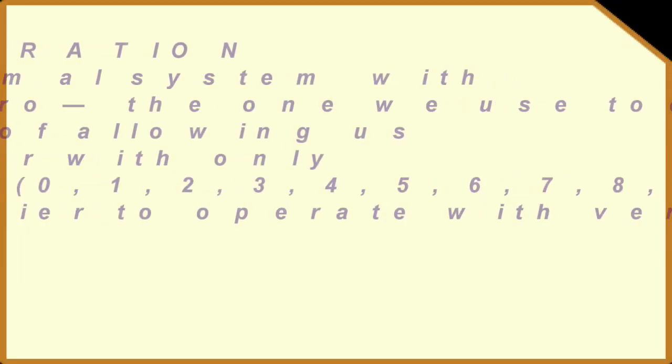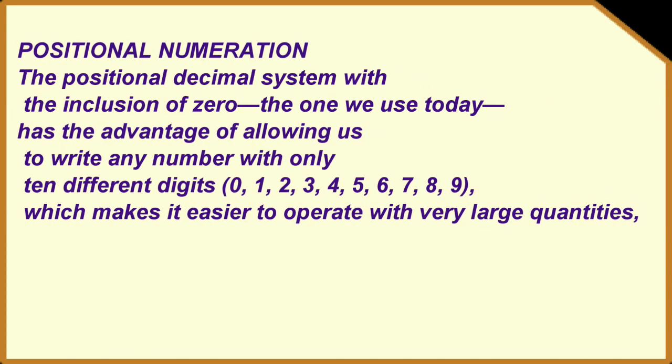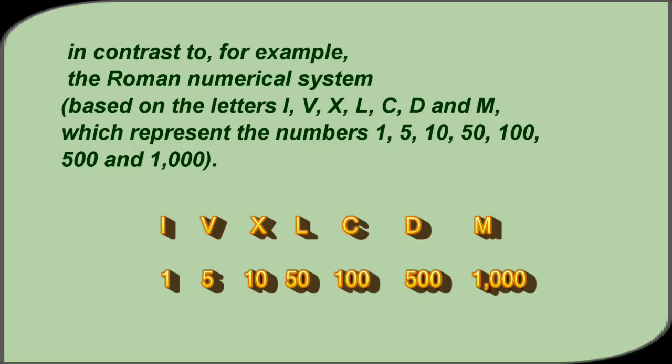Positional numeration. The positional decimal system with the inclusion of 0, the one we use today, has the advantage of allowing us to write any number with only 10 different digits, that is from 0 to 9, which makes it easier to operate with very large quantities. In contrast to, for example, the Roman numerical system based on the letters I, V, X, L, C, D, and M, which represents the number 1, 5, 10, 50, 100, 500, and 1000.